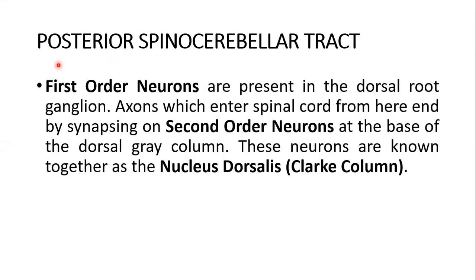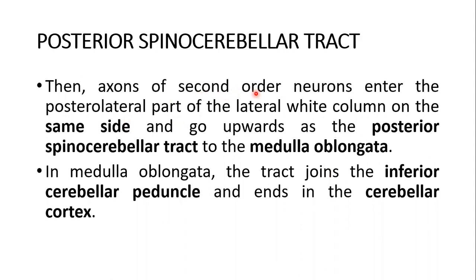We will study the posterior spinocerebellar tract. The first order neuron is the dorsal root ganglion axons, which enter the spinal cord and synapse on second order neurons at the base of the dorsal gray column. These neurons are known together as the nucleus dorsalis or Clark's column. Axons of the second order neurons enter the posterolateral part of the lateral white column on the same side — the ipsilateral side.